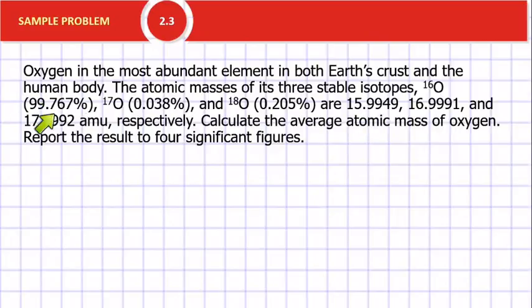But we need to take this percentage, express it as a fraction, divide it by 100. So dividing that by 100, I get 0.99767. And I'm going to multiply that by the mass of that particular isotope, which is, they're given in order here. It's 15.9949 atomic mass units.